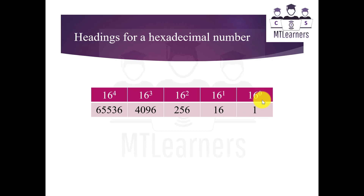As I've shown you the table for binary and decimal numbers — in binary the table uses powers of 2: 2^0, 2^1, 2^2, and so on. In decimal it uses 10^0, 10^1, 10^2, and so on. Now in the case of hexadecimal, the table uses 16^0, 16^1, 16^2, and so on. When we calculate the values we get 1, 16, 256, 4096, and 65536.